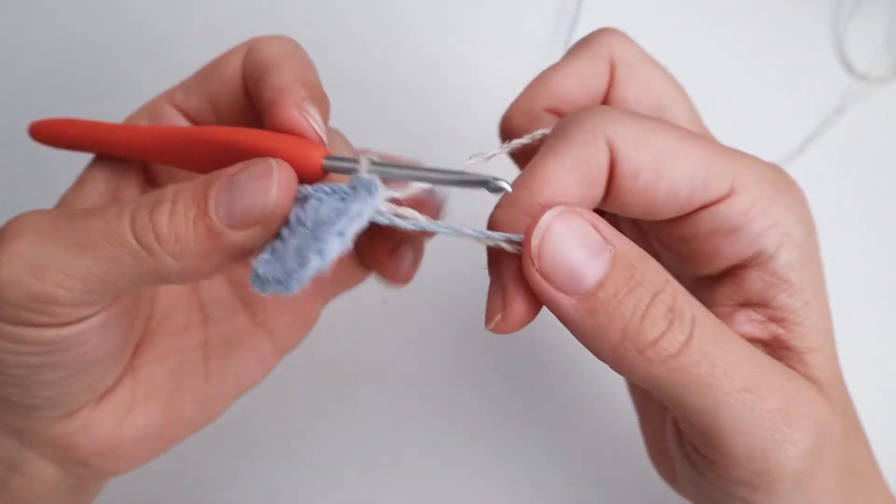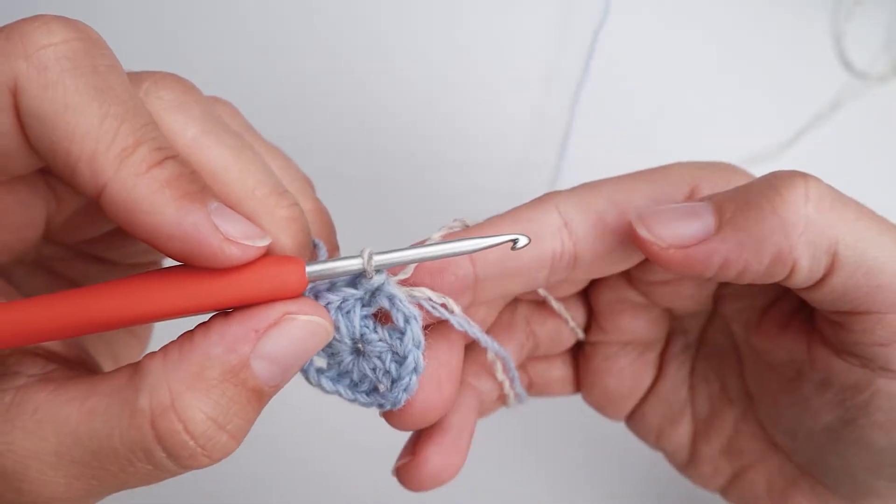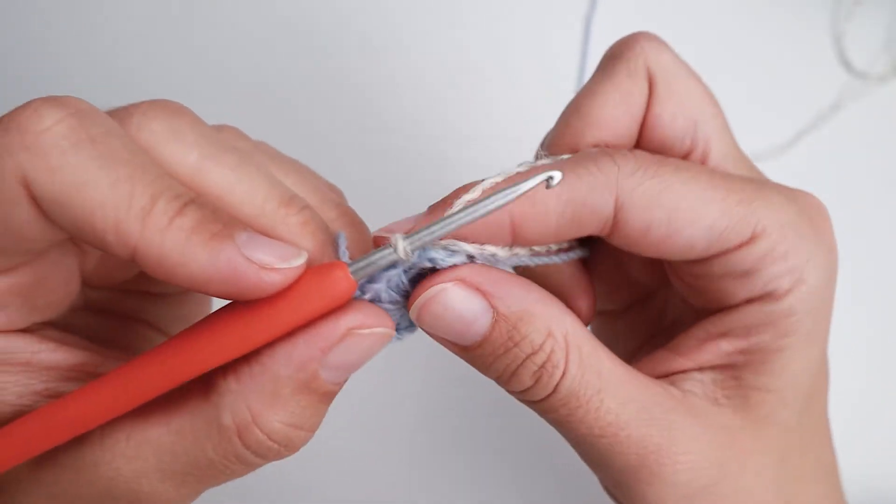But make sure that you take these two ends and crochet around them so you don't have to weave in the ends later.